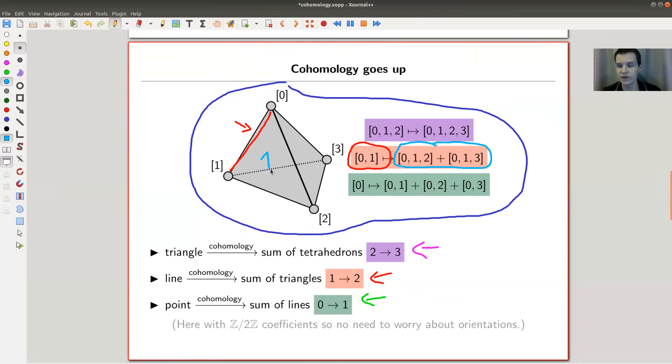So 0, 1, 2 is the one in the front, and 0, 1, 3 is the one in the back. These are the two triangles where my line appears. And this defines me a co-map, right, a coboundary map, whatever you call it. So from lines to triangles.